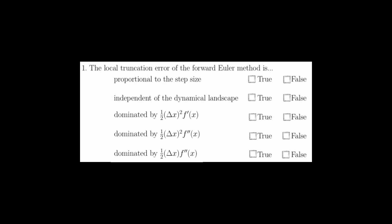The first question on this quiz asks various things about the local truncation error of the forward Euler method. The easiest way to start is to know what the actual error is, and then we can base all the other questions off this. If you recall, this is actually the error of the forward Euler method.